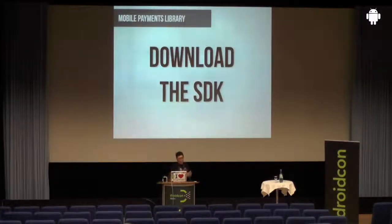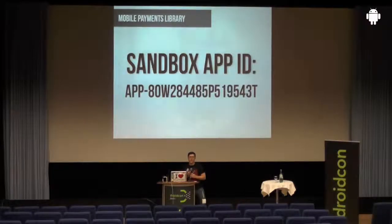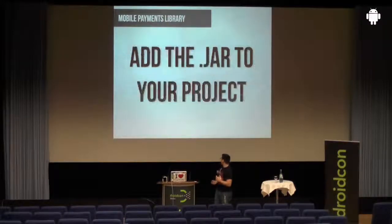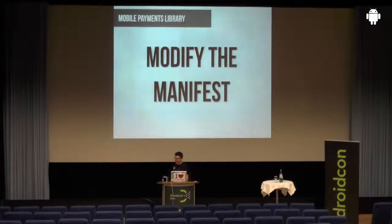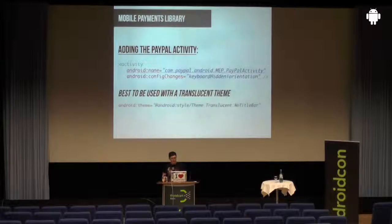To get started, you need to download the SDK and get your API credentials at x.com, our developer homepage. You can use our sandbox app ID for testing — it's always the same, so it's not a problem to use it. Add the jar file we provide into your project, and you need to modify your Android manifest: add the PayPal activity, add the config changes, and the translucent theme looks good with it.